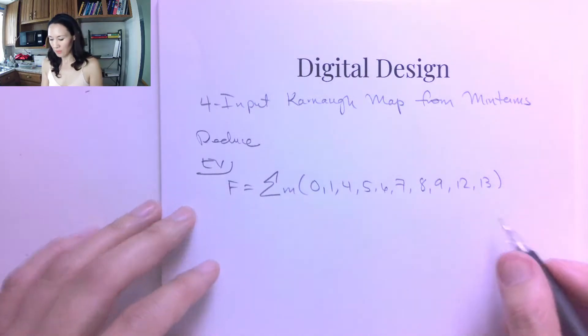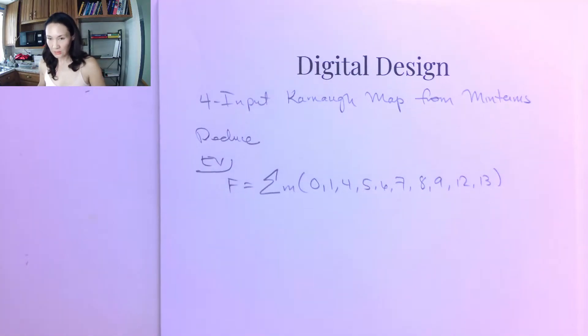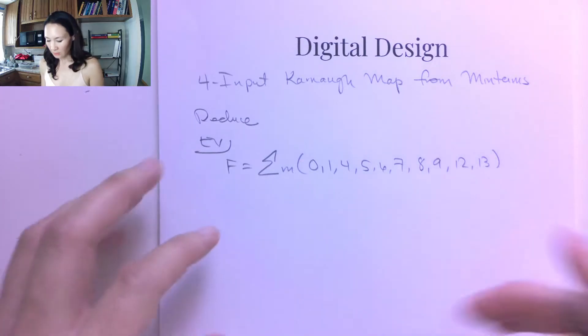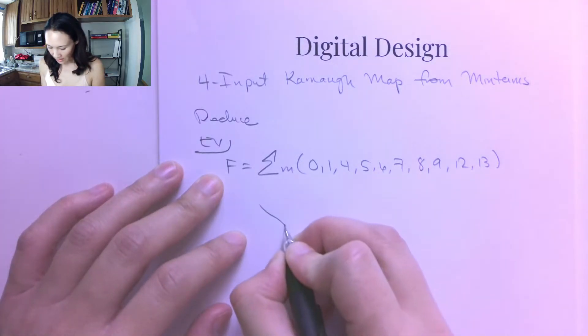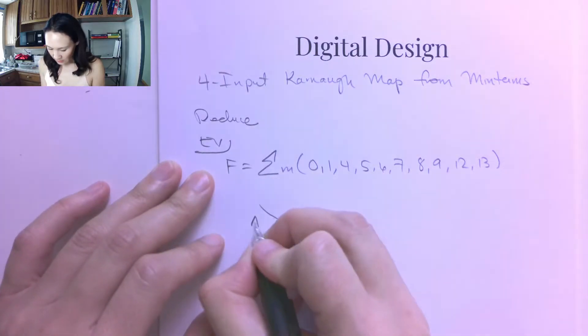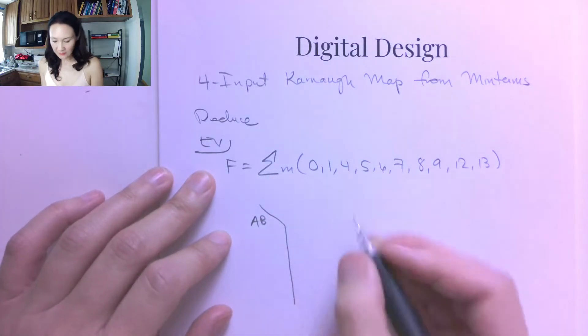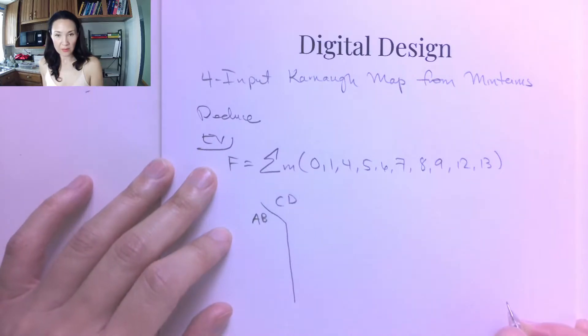If we had to use Boolean algebra, this would be like a monstrous function to have to reduce. So instead we're going to put this into our four input Karnaugh map, and to construct that I put A and B on the left side, I put C and D up on the top.